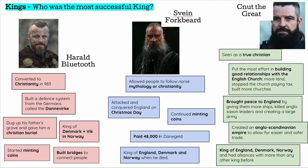Finally, let's look at the Viking kings. The first three Viking kings are all from Denmark — make that clear in your exam. It starts with Harold Bluetooth. When he became king, he converted to Christianity — that's one of his main achievements. He created a defence system to stop the Germans from entering Denmark called the Danevirke, dug up his father's grave and gave him a Christian burial, started minting coins to help with trade, and built bridges to connect people — which is where the name Bluetooth comes from.